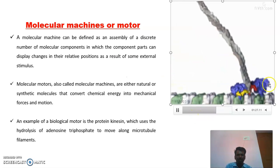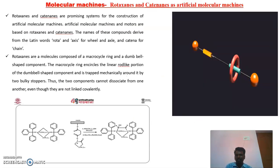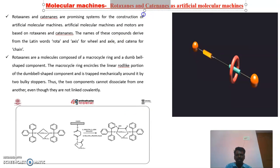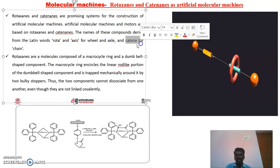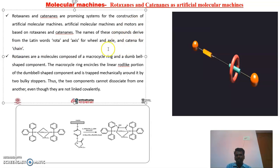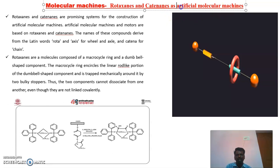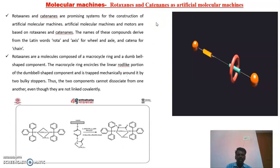This is called a molecular machine or molecular motor. Next, we are going to discuss about rotaxanes and catenanes. The name rotaxane implies 'rota' meaning wheel and 'axis' meaning axle — so rotaxanes means wheels and axles. Catena means chain. These are artificial molecular machines; they are not natural. We make these artificial molecular machines to compensate for the failure of biological functions — if any biological function fails, we can implement these artificial molecular machines to carry it over.